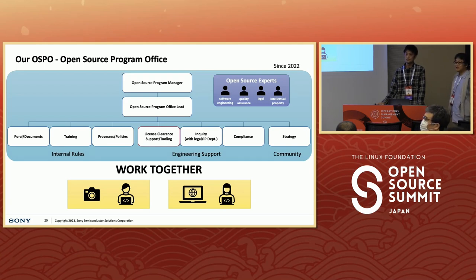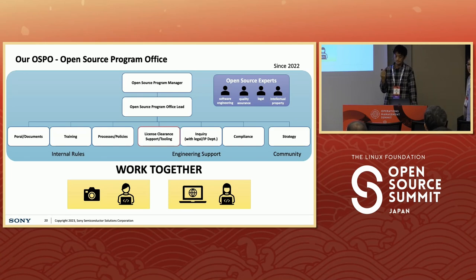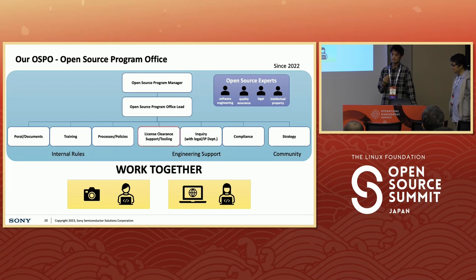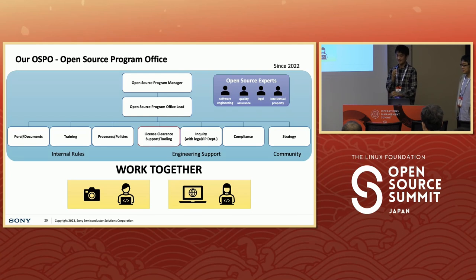Which group is actually running your open source scanning tools like FOSology and FOSSID — is that the group in India or the product developers? The India team. So that means the India team has access to the source code for the different products. Yes. Gathering all the source code to scan is a kind of big problem, so in that case, the India team and product developers work together to gather all the source code to scan.